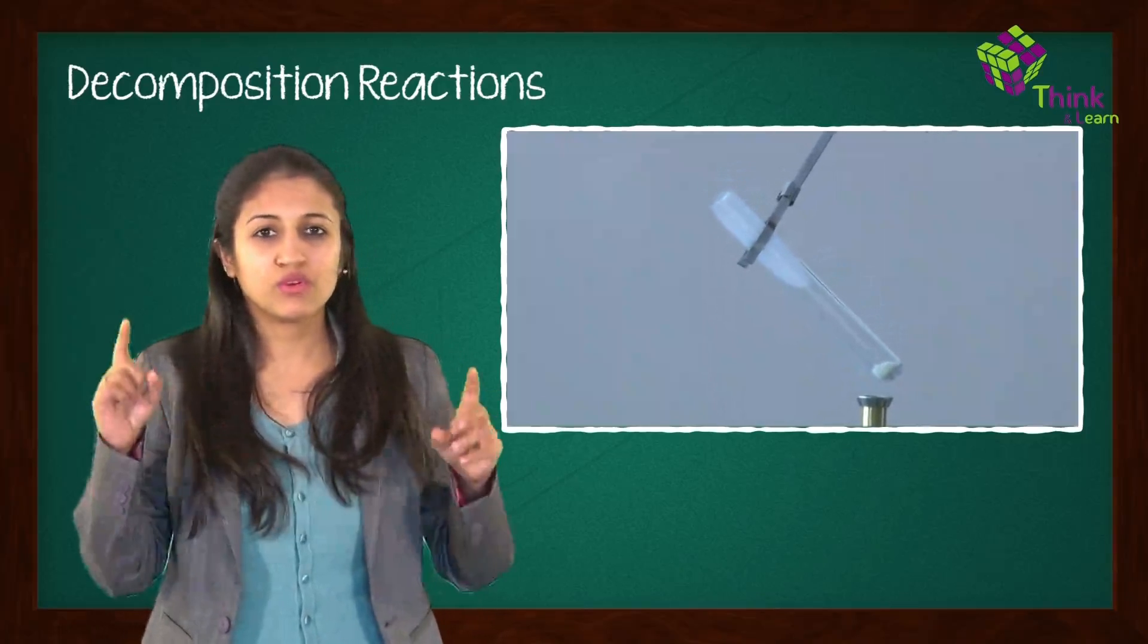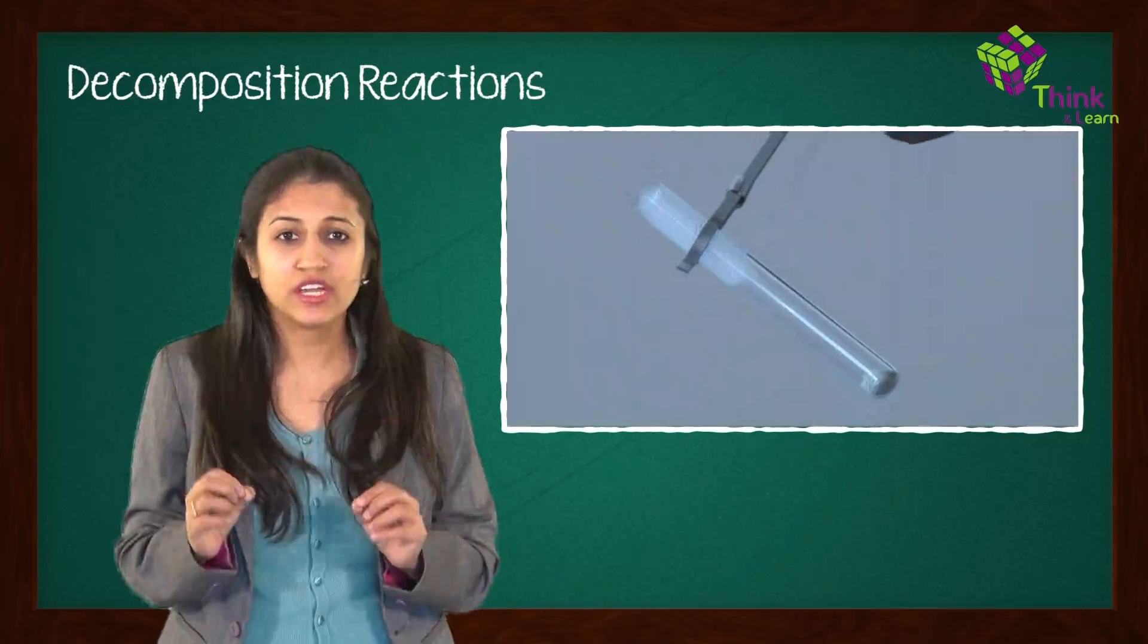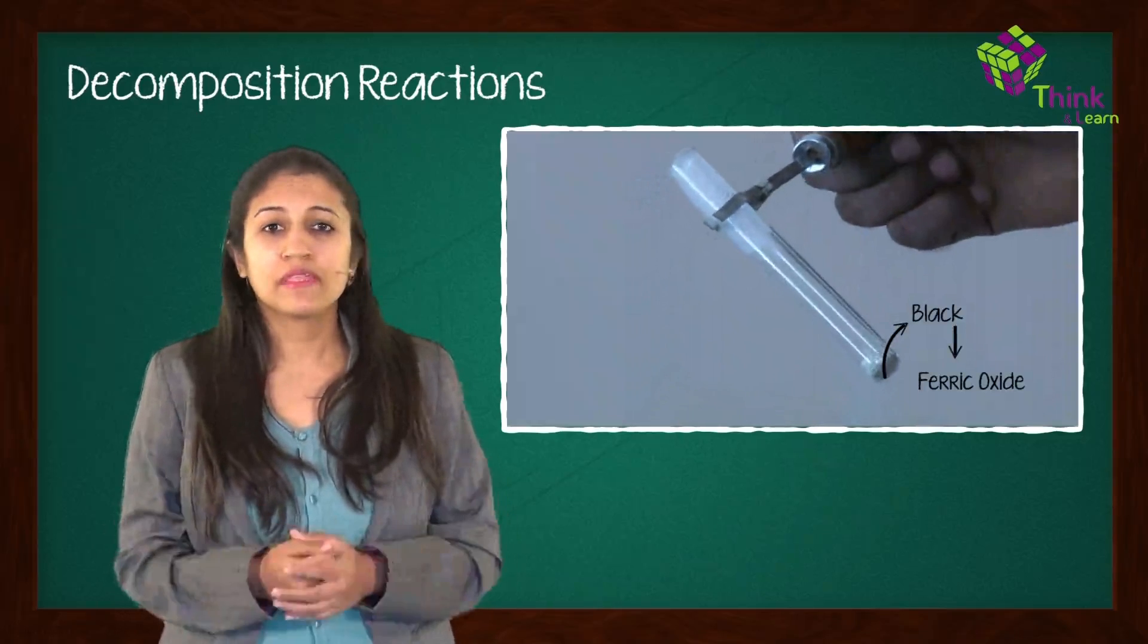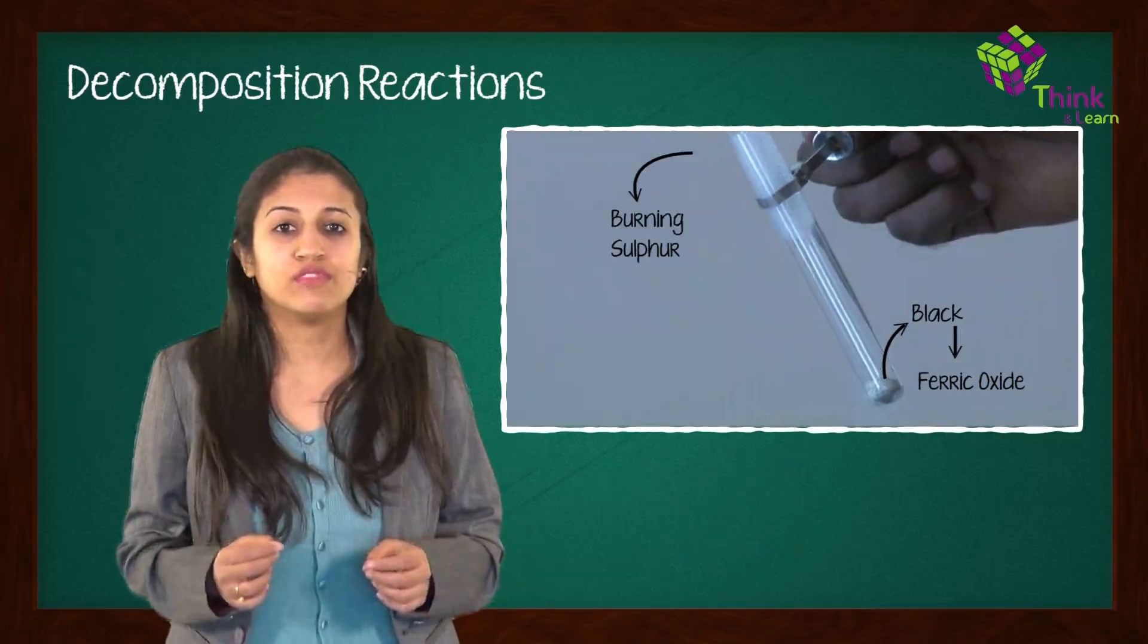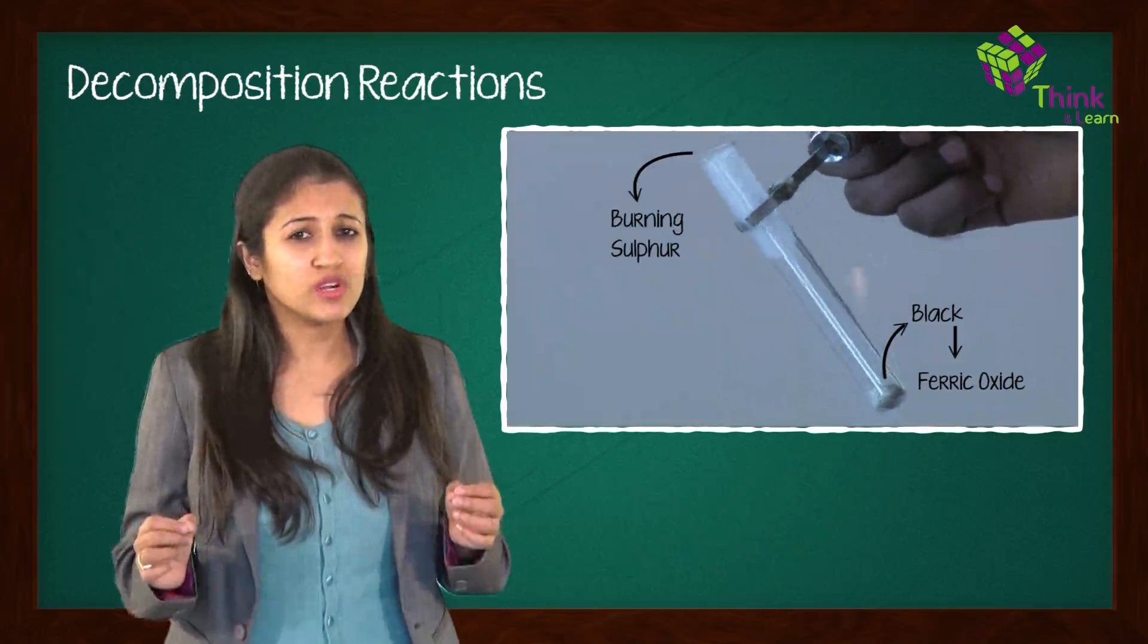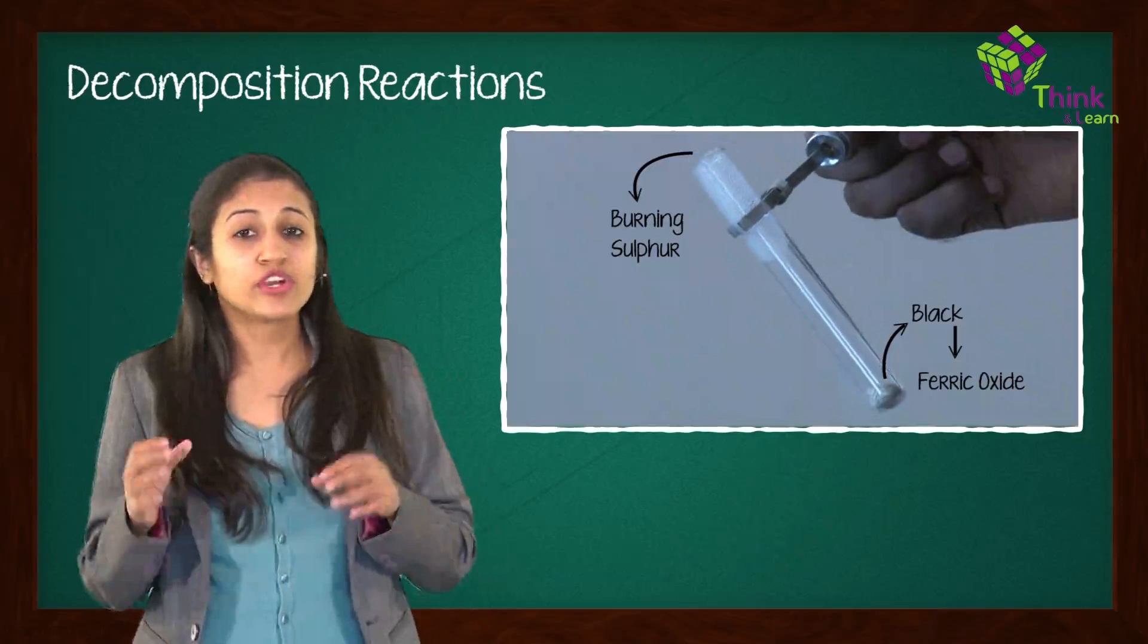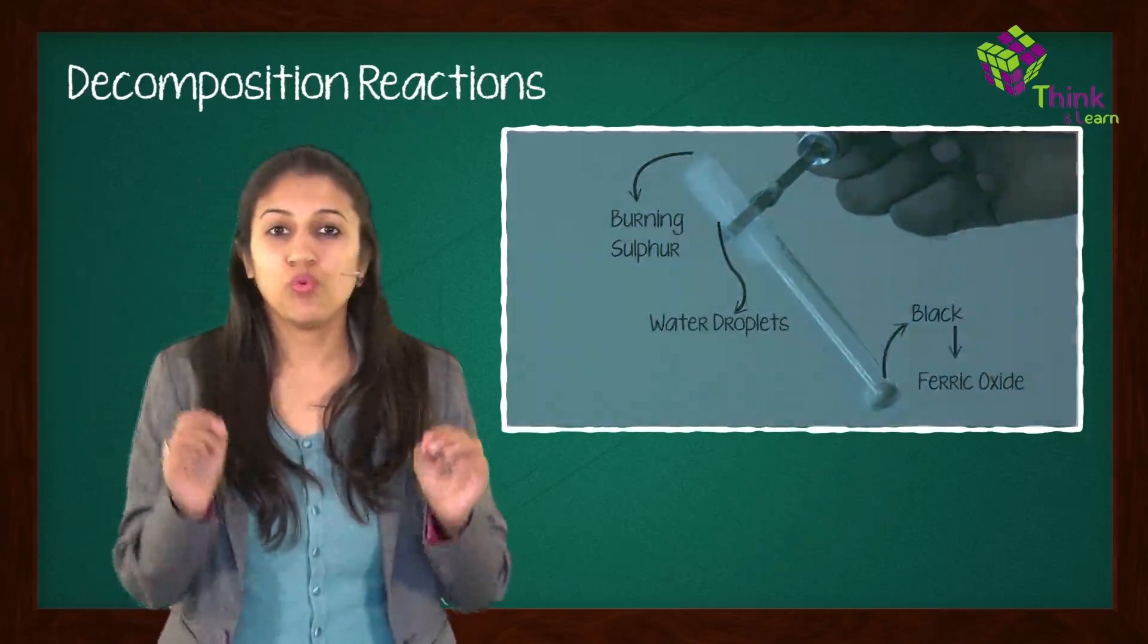So what can you actually observe? One, the green color of the ferrous sulfate crystals are changing to a black residue. This is ferric oxide, represented as Fe2O3, which is a solid. Then you can also see fumes coming from the mouth of the test tube. This is burning sulfur from sulfur dioxide and sulfur trioxide. The odor would be similar to the smell you will get after loads of firecrackers have burst during Diwali. And finally, you can also see some droplets at the mouth of the test tube. This is water.